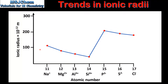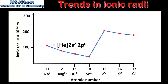Next we'll look at the data we discussed previously as a graph. Starting with the sodium ion, we see a decrease in the ionic radius as we go from the sodium ion to the magnesium ion to the aluminium ion and to the silicon ion. We then see a large increase in the ionic radius as we go to the phosphide ion, and the ionic radius then decreases as we go to the sulfide ion and then to the chloride ion.